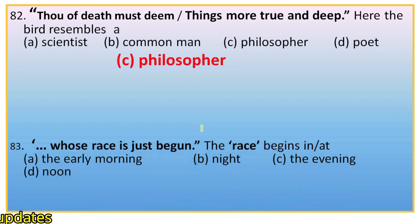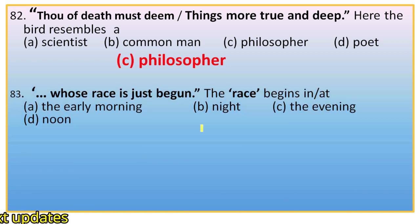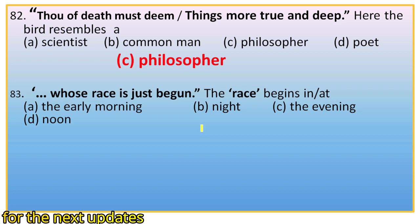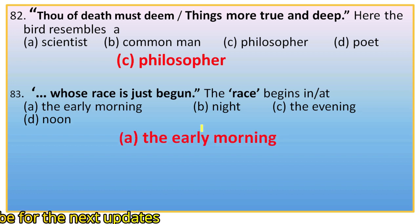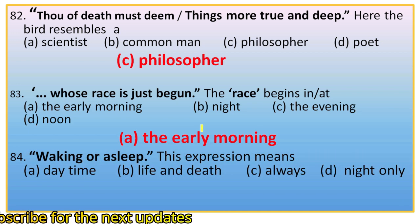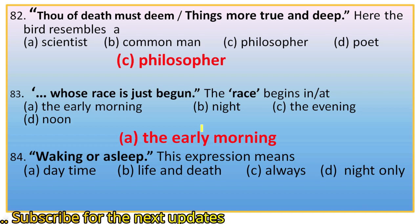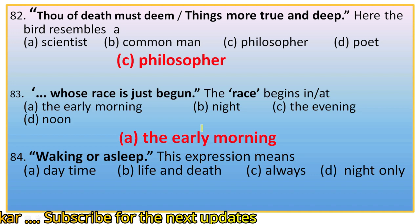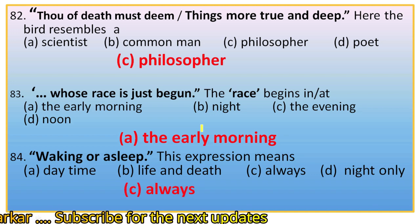Question 83: 'Whose race is just begun?' The race begins in or at — options: early morning, night, evening, noon. We know that the Skylark starts its journey in the early morning. So the right option is A, the early morning. Question 84: 'Waking or asleep.' This expression means — options: daytime, life and death, always, night only. 'Waking or asleep' means always, at all times. The right option is C.